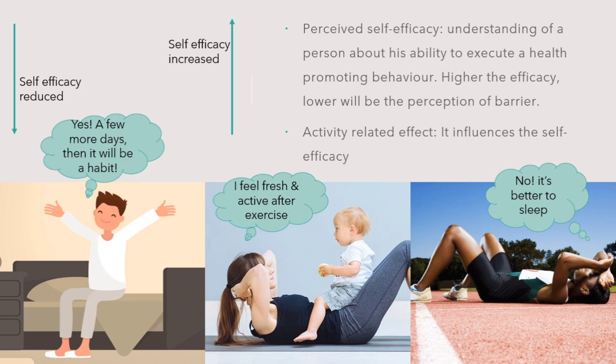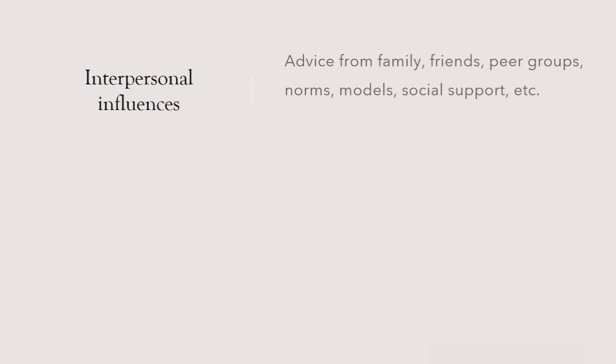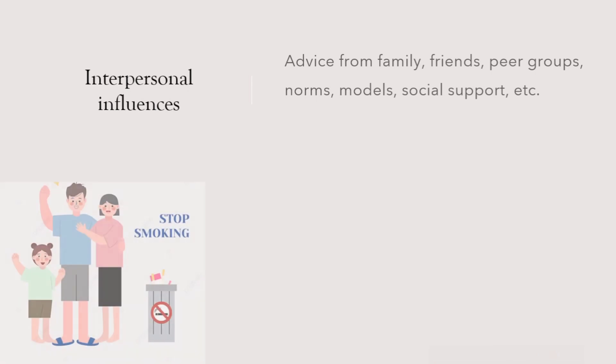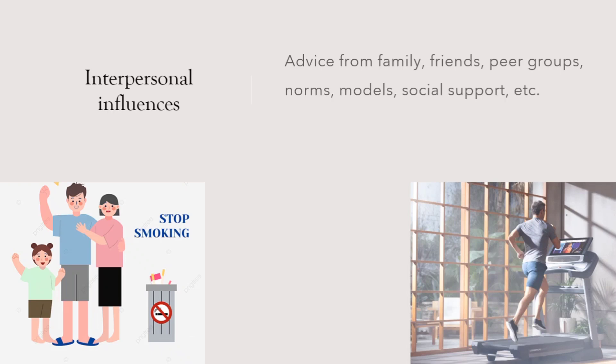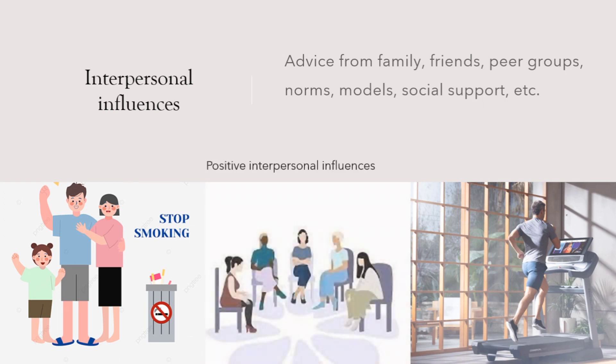There are also factors like interpersonal influences and situational influences. Interpersonal influences come from family, friends, and peer groups — someone advising us to take preventive measures, norms followed by people around us, or social support. For example, if smoking is prohibited in a family, a good impact comes on the family members automatically. Or having a role model whose healthy lifestyle you follow, or support groups making you aware of health problems and preventive measures — that is interpersonal influence.